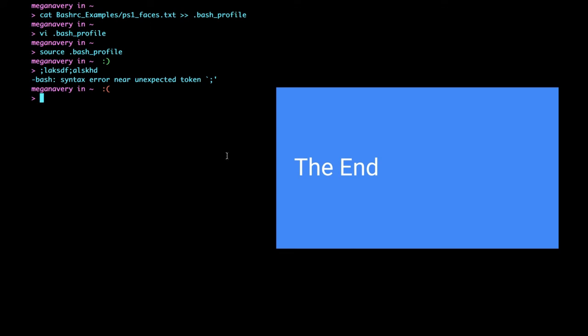That's pretty much all you need to set up your own bash profile. I have a bash_profile.txt file linked in the description so you can take exactly what I just did and use it. There's a Mac version as well as a Linux version with some tweaks to make colored grep and colored ls work. I hope that was informative.